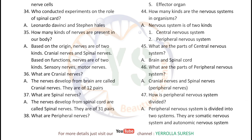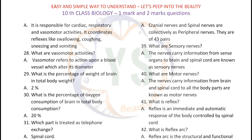Who conducted experiments on the role of spinal cord? Leonardo da Vinci and Stephen Hales. How many kinds of nerves are present in our body? Based on origin, nerves are of two kinds: cranial nerves and spinal nerves. Based on functions, nerves are of two kinds: sensory nerves and motor nerves. Cranial nerves are developed from the brain — they are of 12 pairs. Spinal nerves are developed from the spinal cord — they are of 31 pairs. Cranial and spinal nerves collectively are called peripheral nerves, totaling 43 pairs. Sensory nerves carry information from sense organs to brain and spinal cord, also called afferent nerves. Motor nerves carry information from brain and spinal cord to all body parts.